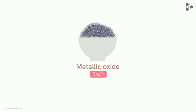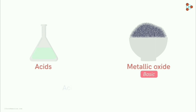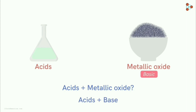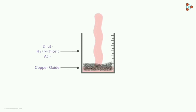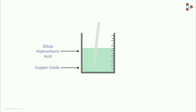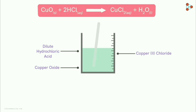Metallic oxide is an example of a base. What happens when a metallic oxide reacts with an acid? We know that when acid reacts with a base, salt and water are formed. Take a small amount of copper oxide in a beaker and add dilute hydrochloric acid slowly while stirring. The colour of the solution becomes blue-green and the copper oxide dissolves. When copper oxide reacts with hydrochloric acid, copper chloride and water are formed.